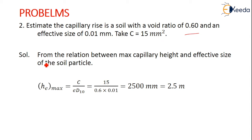We know the relation: (hc)max = C/(e × D10). C value is given as 15 mm², e value is 0.6, and D10 is given as 0.01 mm. Just substitute the values and do the calculation. We have 2500 mm. If you convert to meters, it is 2.5 meters. The maximum height is given as 2.5 meters. Thank you.